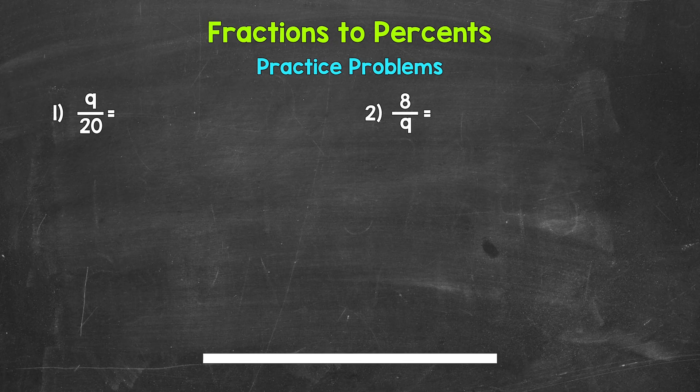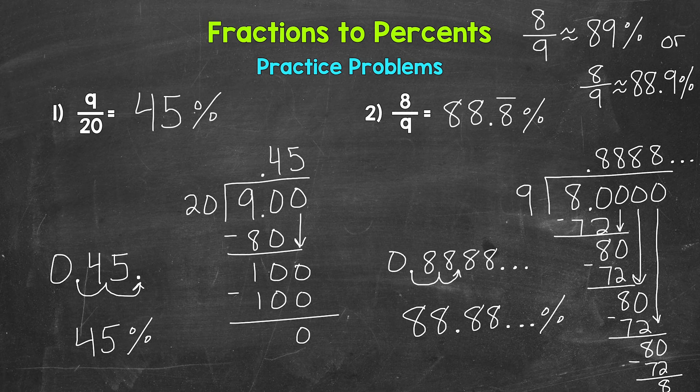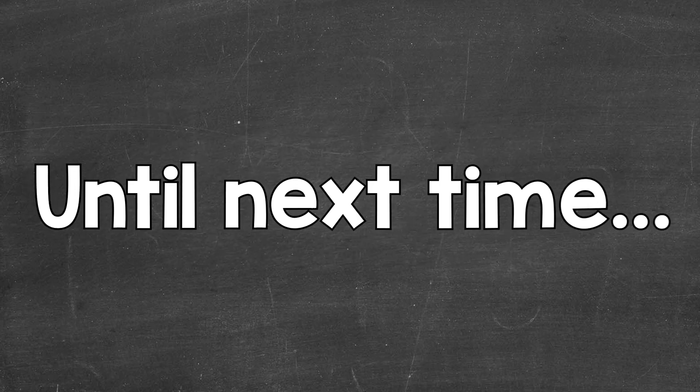Okay, so that was four minutes. Let's go over the answers. For number one, 9 twentieths equals 45%. Moving on to number two, 8 ninths equals 88.8 repeating percent. Or maybe you rounded — rounding to the nearest whole percent, 8 ninths is approximately 89%. Or rounding to the nearest tenth, 8 ninths is approximately 88.9%. So there you have it — that's how to convert fractions to percents. I hope that helped. Thanks so much for watching. Until next time, peace.